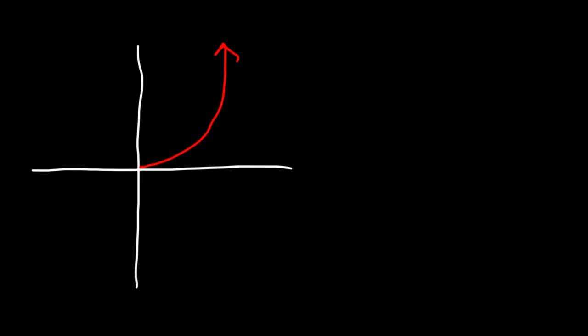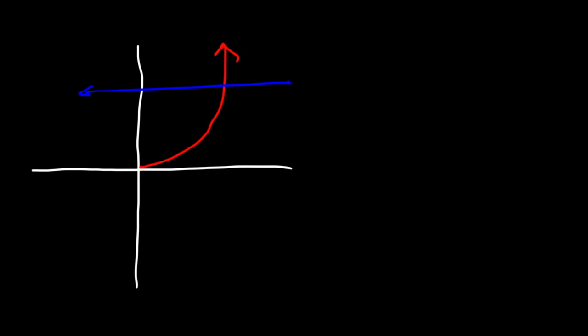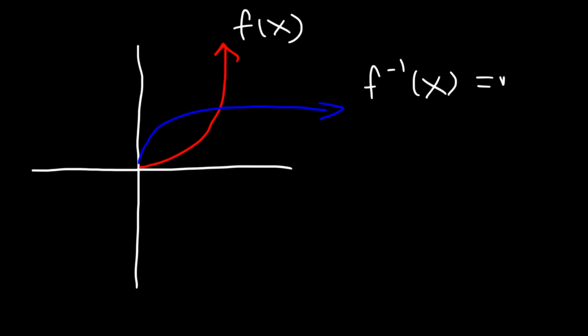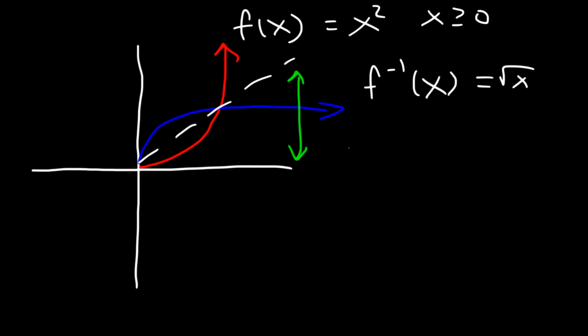Let's prove this using a graph. Draw the right side of y equals x squared and just the top part, y equals the positive square root of x. These two are inverses of each other. Notice that this curve passes the horizontal line test — it touches it once — so the right side of y equals x squared is a one-to-one function. Therefore the inverse, y equals the square root of x, passes the vertical line test and is a function.